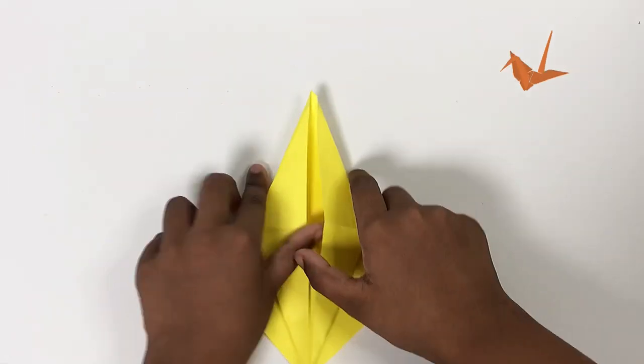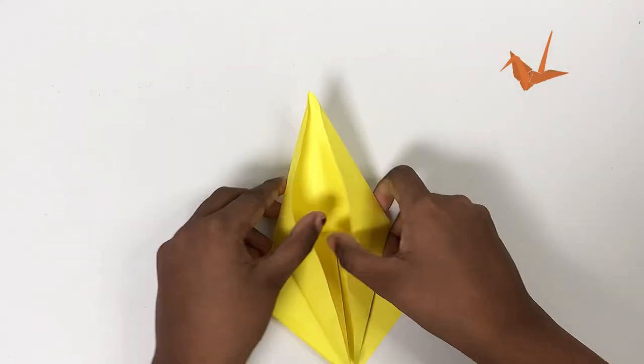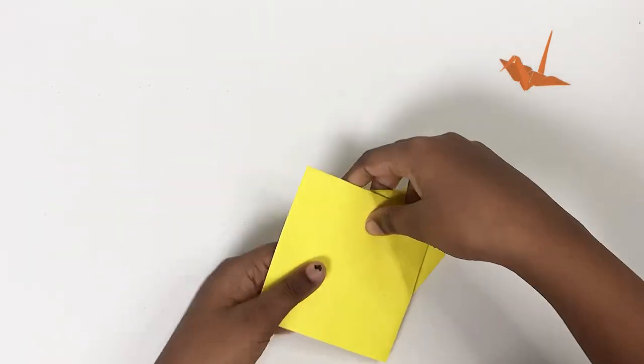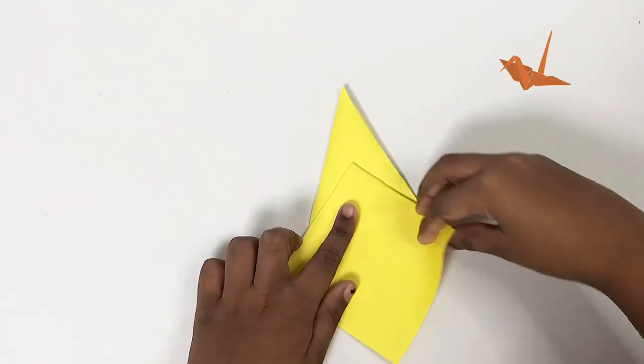And then you'll get like this type of pea pod. You see? Now flip it over and do the same on this side.